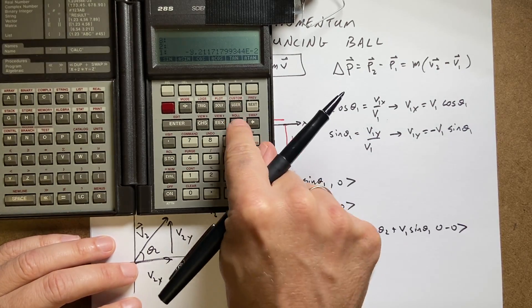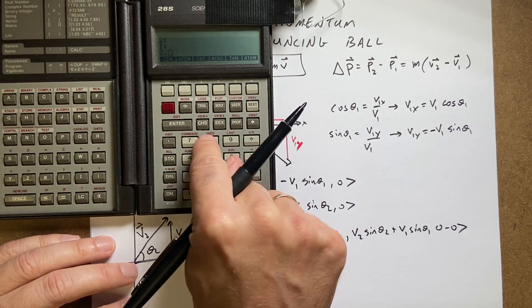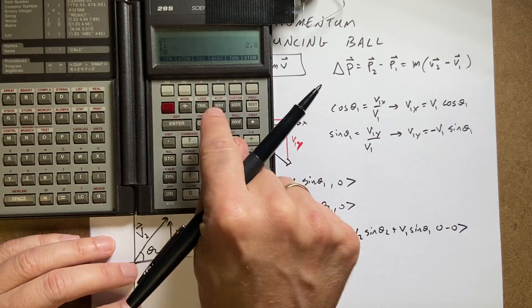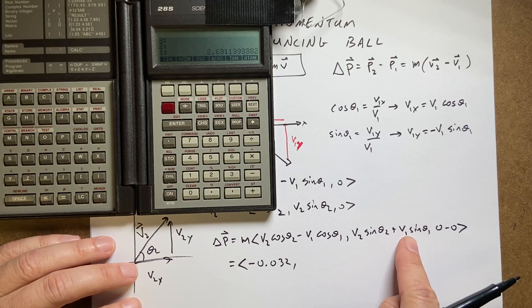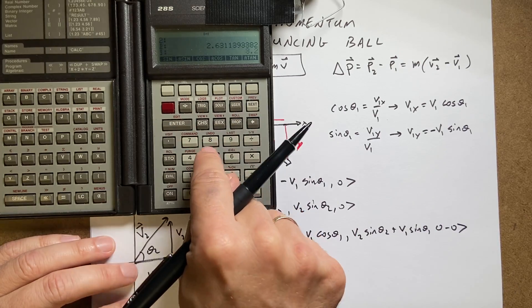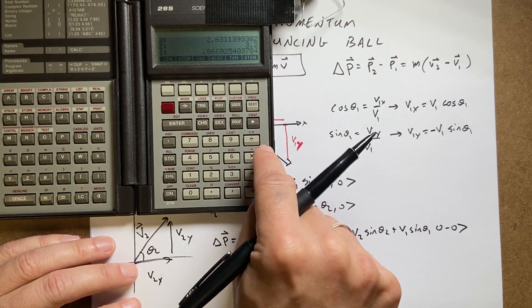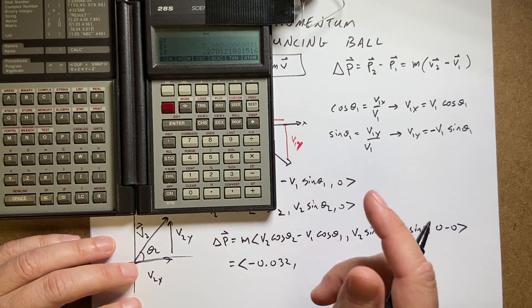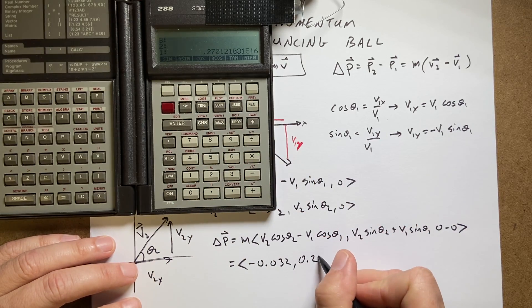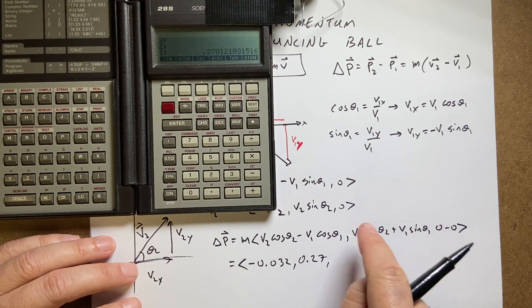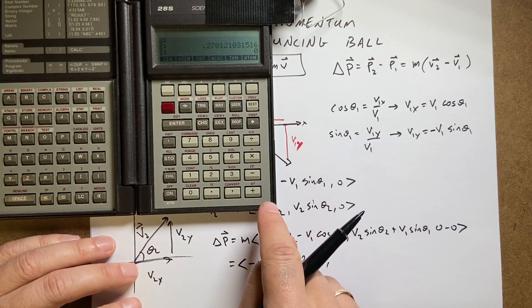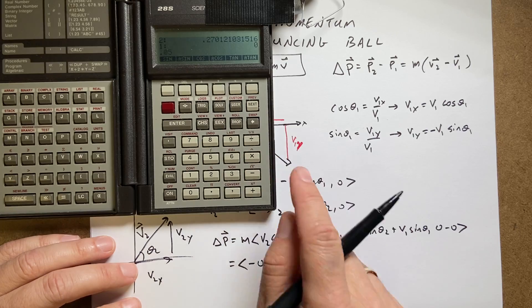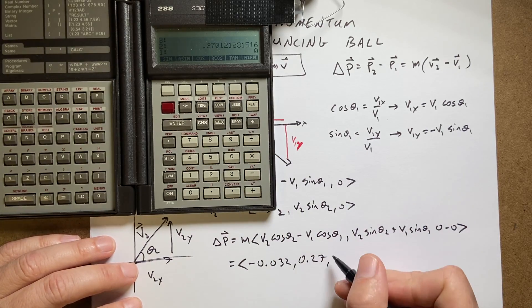Now let's do the same thing for the y direction. I'm going to start off with v2 which is 2.8 times sine of 70 degrees. And then I'm going to do v1 which is 3.2 times sine of 60 degrees. And then I'm going to add these. And then I need to multiply by 0.05 the mass. And I get 0.27. Now I need to do the z component. So I'm going to take 0 minus 0 and multiply that by 0.05. And this is really just a math joke. Because we already knew it was going to be 0. But I did it anyway.